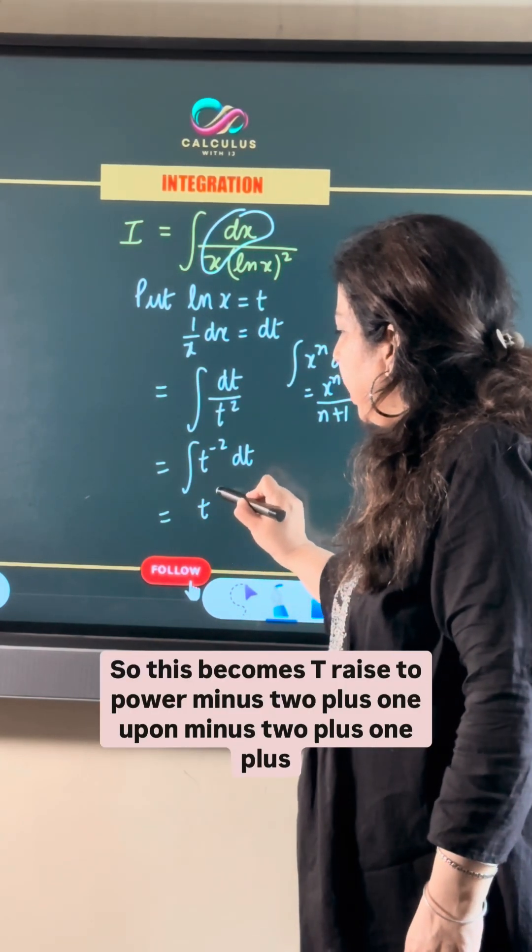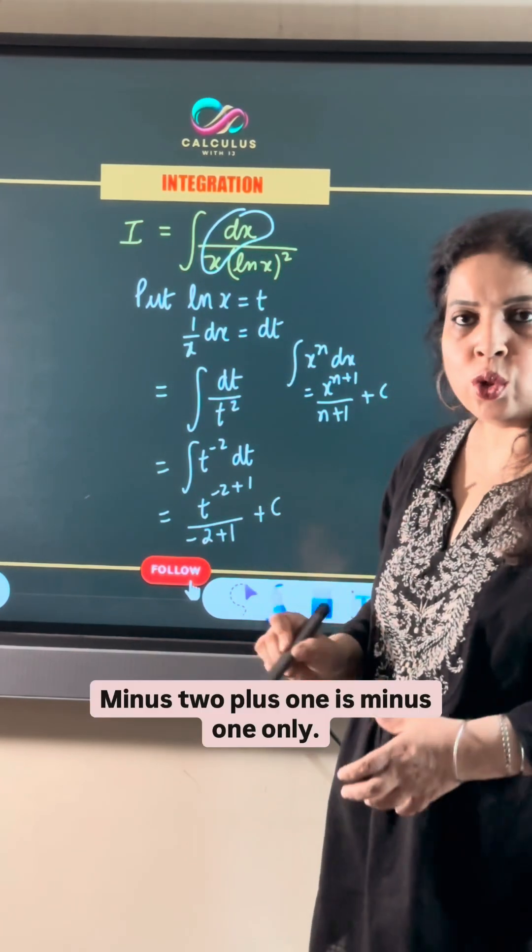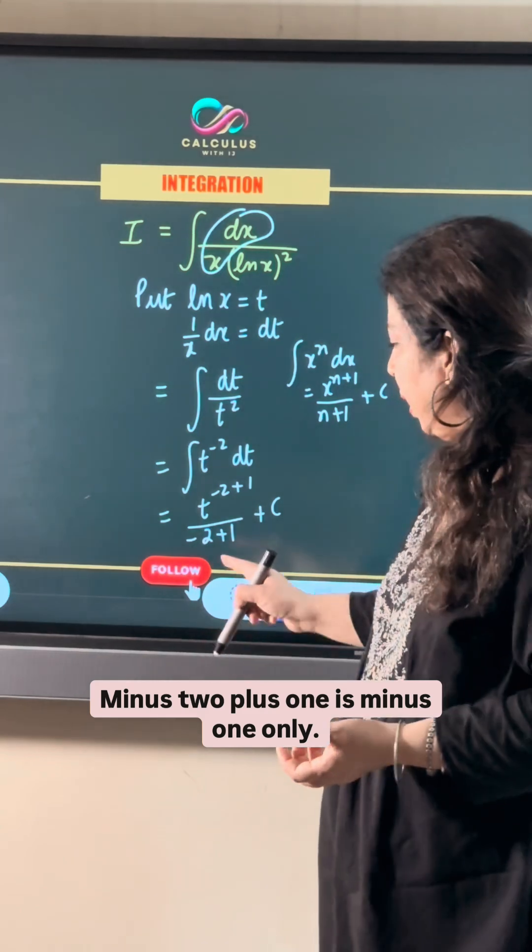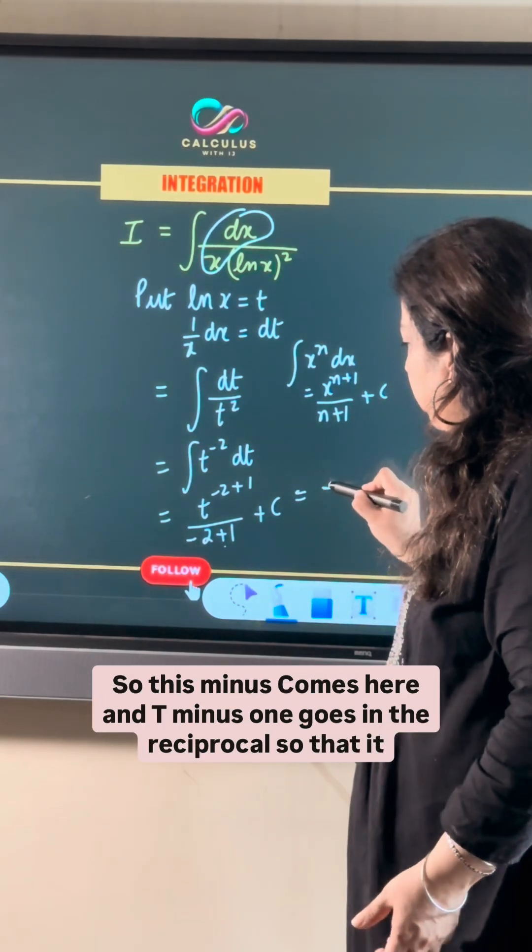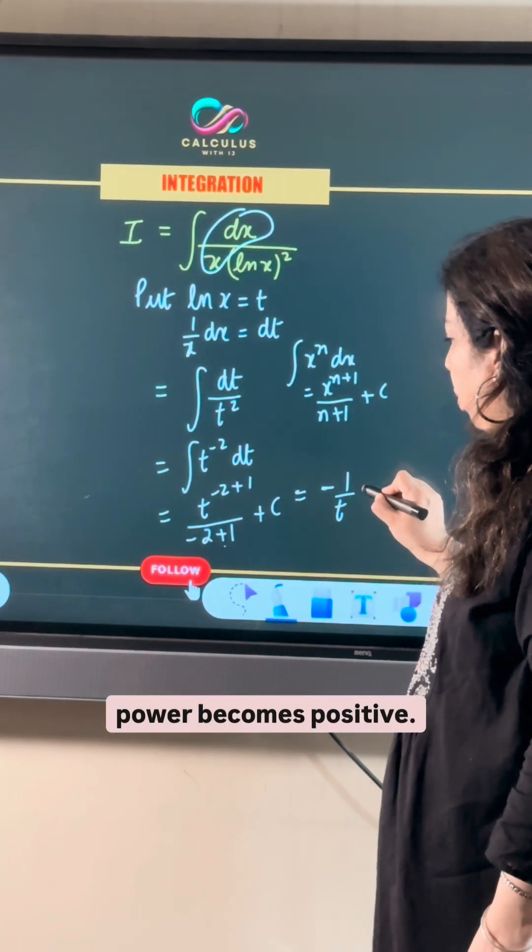So this becomes t raised to power minus 2 plus 1 upon minus 2 plus 1 plus c. Minus 2 plus 1 is minus 1 only. So this minus comes here and t raised to power minus 1 goes in the reciprocal so that its power becomes positive.